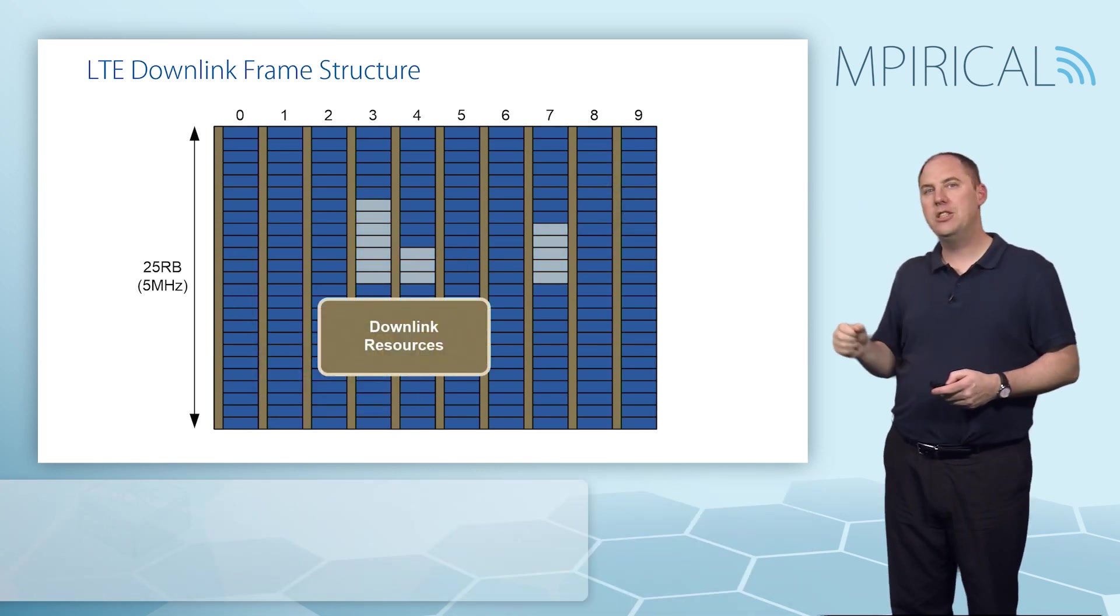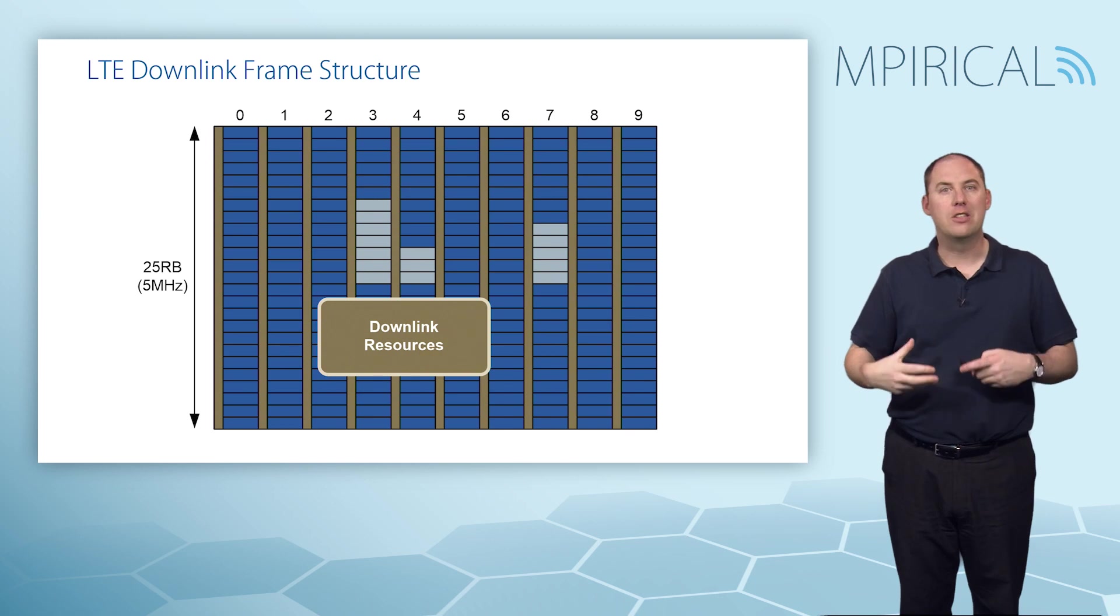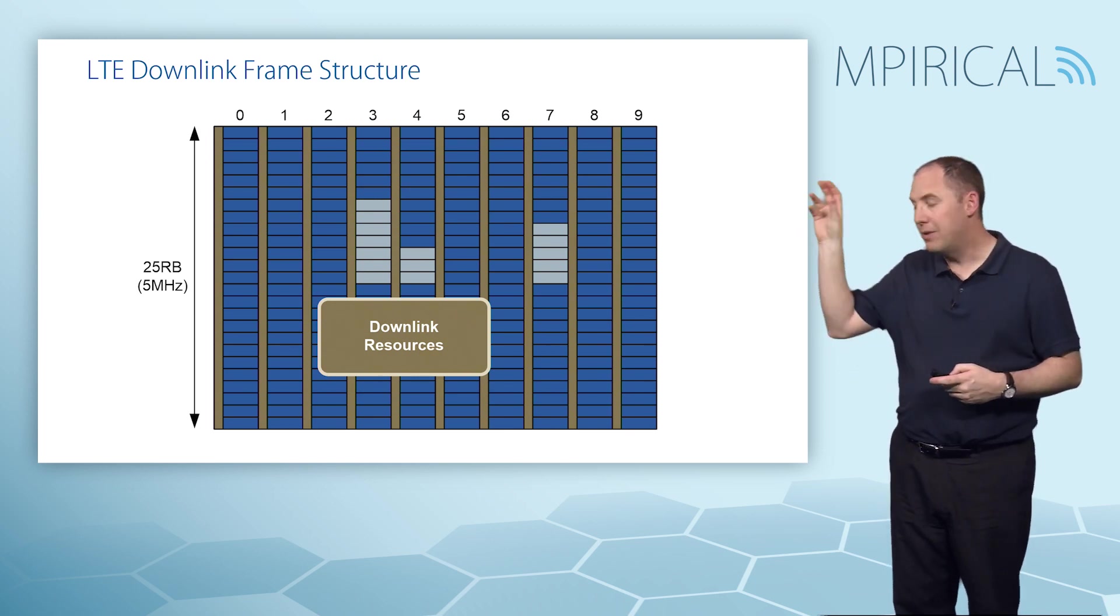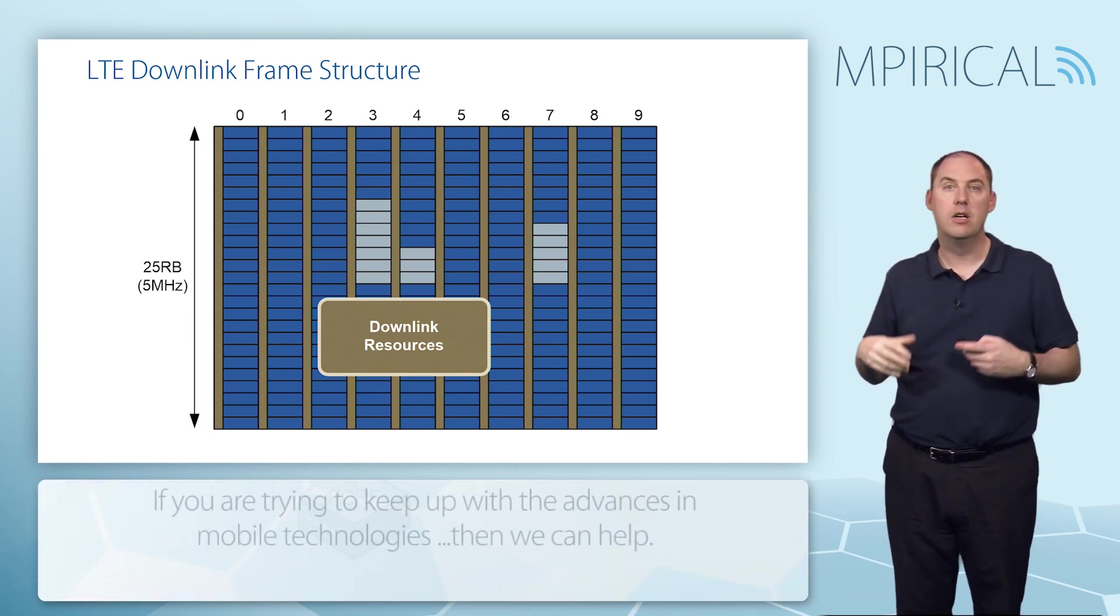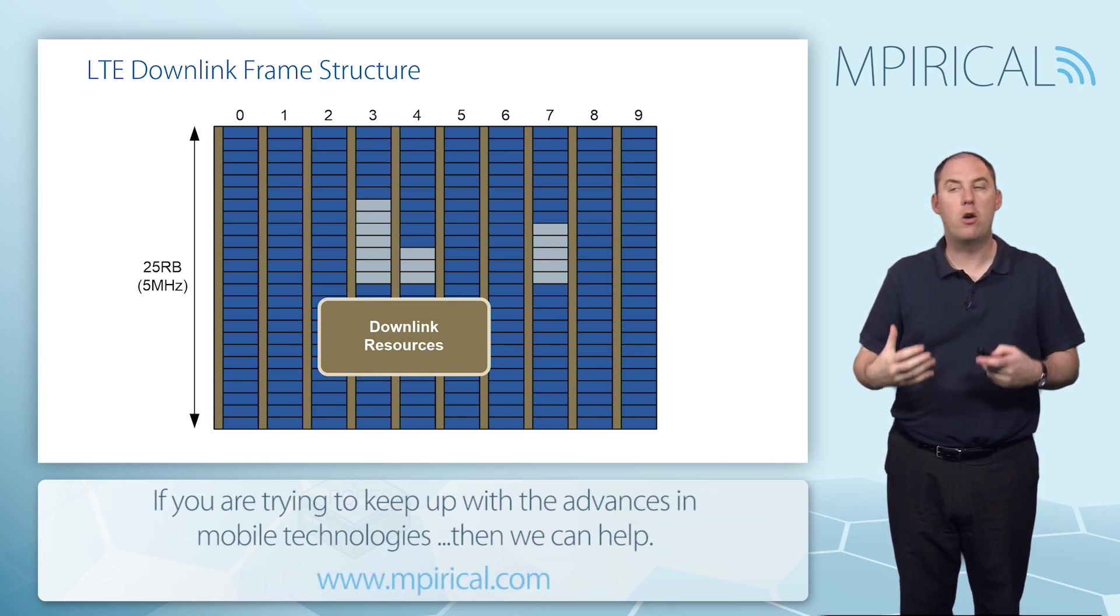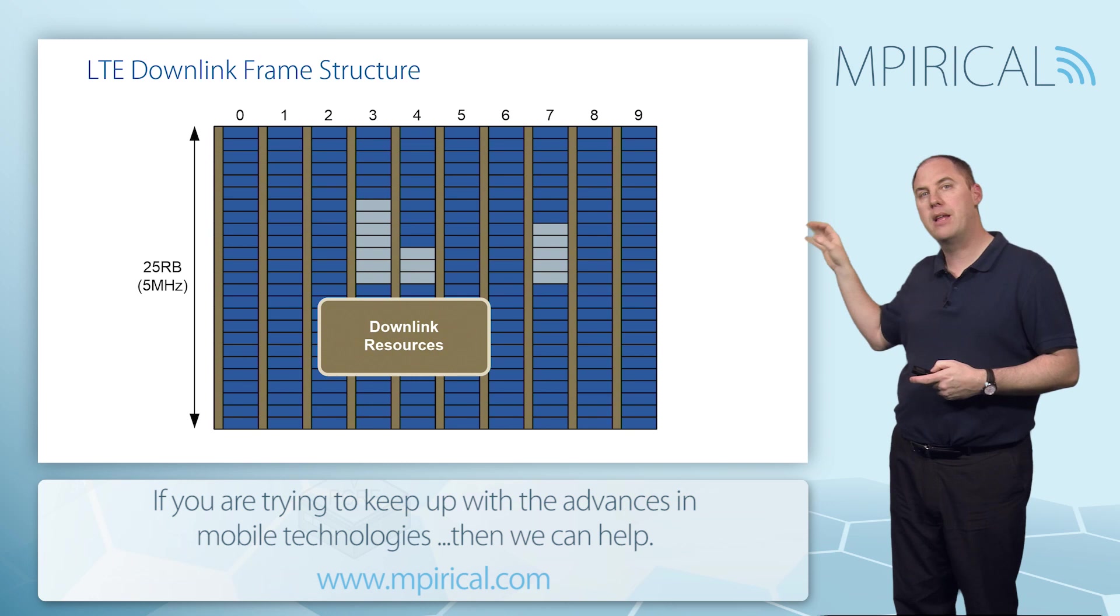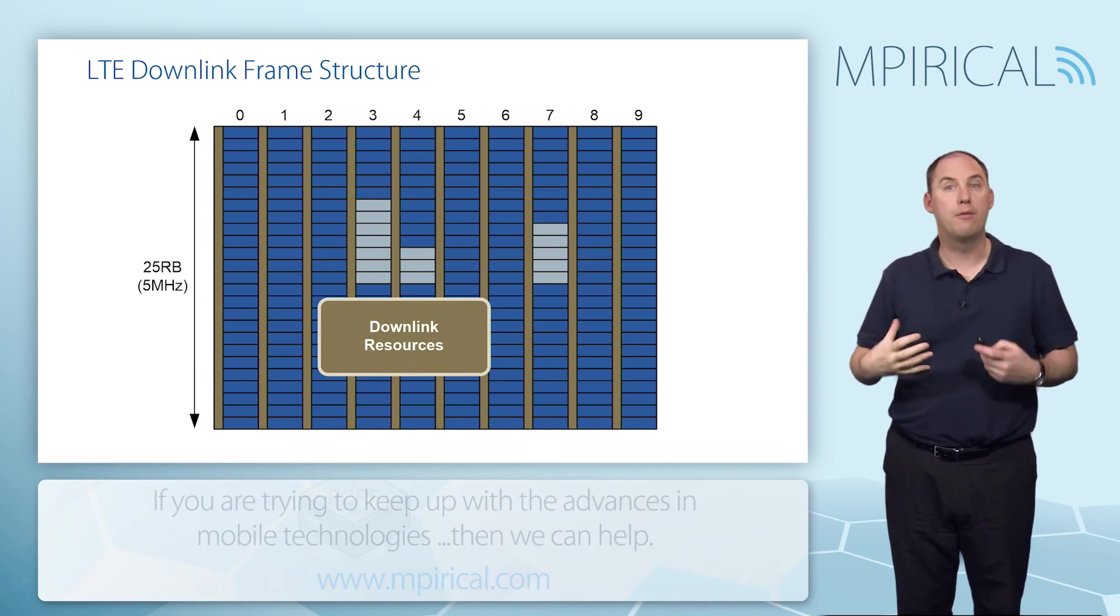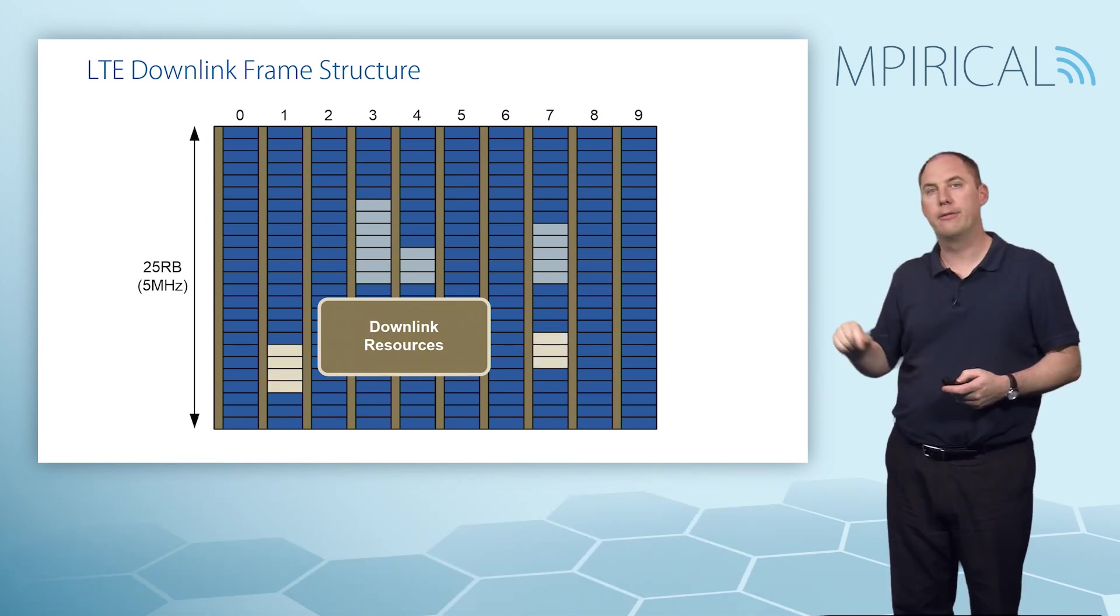As far as the allocation is concerned, the control channel, the scheduler in the downlink, those brown strips are going to schedule users. A user might be scheduled some resources within a sub-frame, and that might be ongoing so that in different sub-frames they can be allocated resources. A different user can be allocated different resources.